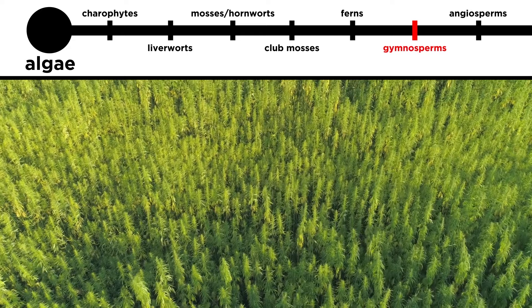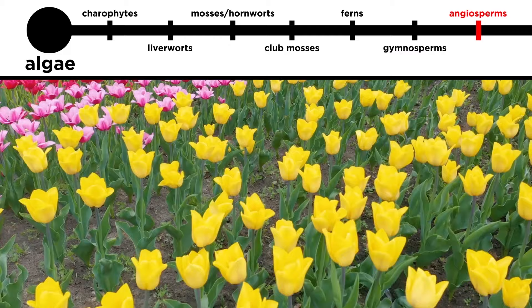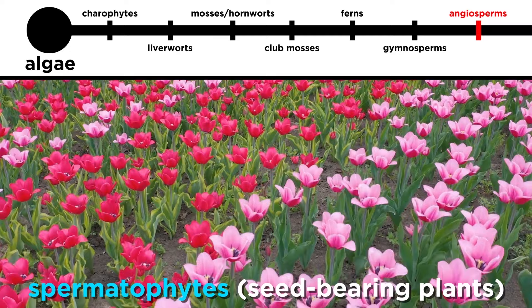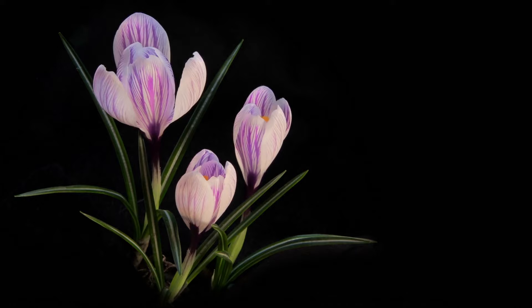We just learned about the emergence of gymnosperms, which include plants like pine trees, which had a major impact on the topography of earth. But there is one more major group that had yet to evolve, and that is the angiosperms. Angiosperms are the second kind of true seed-bearing plants, called spermatophytes, and they are also known as flowering plants.